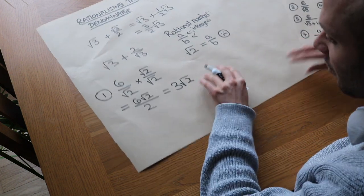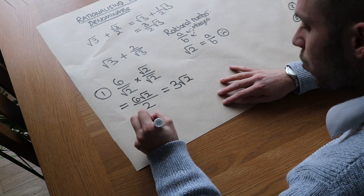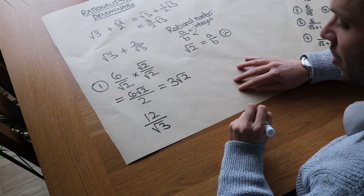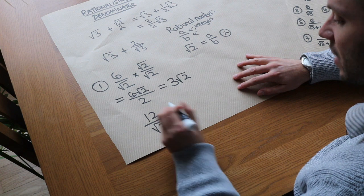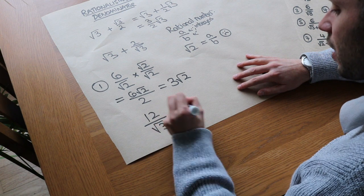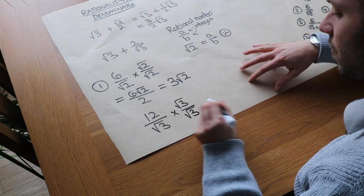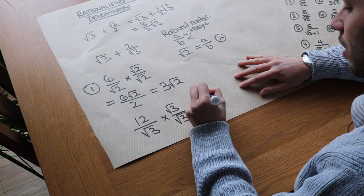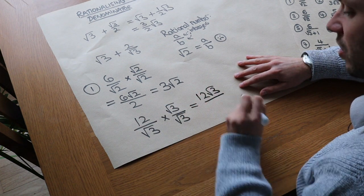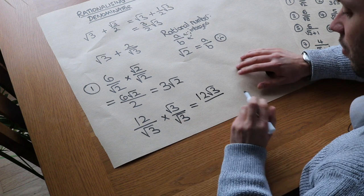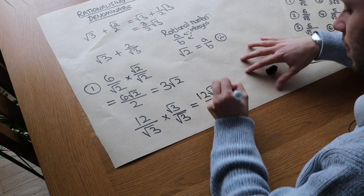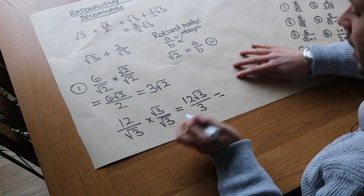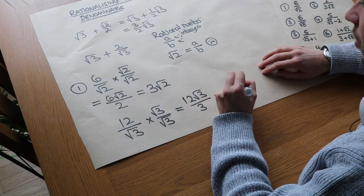Let's do another one. If we had 12 divided by root 3, we multiply top and bottom by root 3. The top becomes 12 root 3 and the bottom is root 3 times root 3 which is 3. Then 12 lots of root 3 divided by 3 gives 4 lots of root 3.